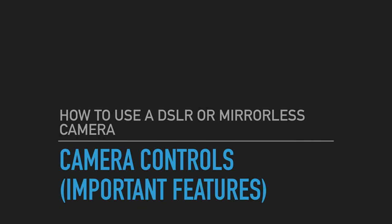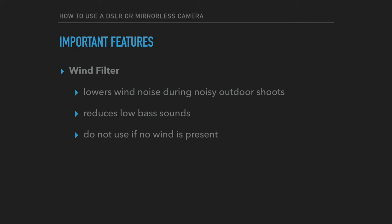The wind filter is a feature available on interchangeable lens cameras that lowers the amount of wind noise recorded during noisy outdoor film shoots. The feature reduces overall low bass sounds, which has the effect of removing the sound of wind from recordings. Unfortunately, this feature takes away a portion of the audio spectrum, meaning that the rest of the sounds do not end up sounding as natural as they could.